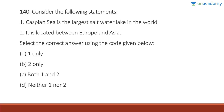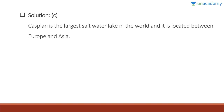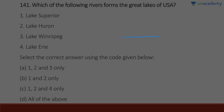Question 140: The Caspian Sea is the largest saltwater lake in the world — correct. It is located within Europe and Asia — also correct. Answer is C, both one and two. Both statements are absolutely correct.